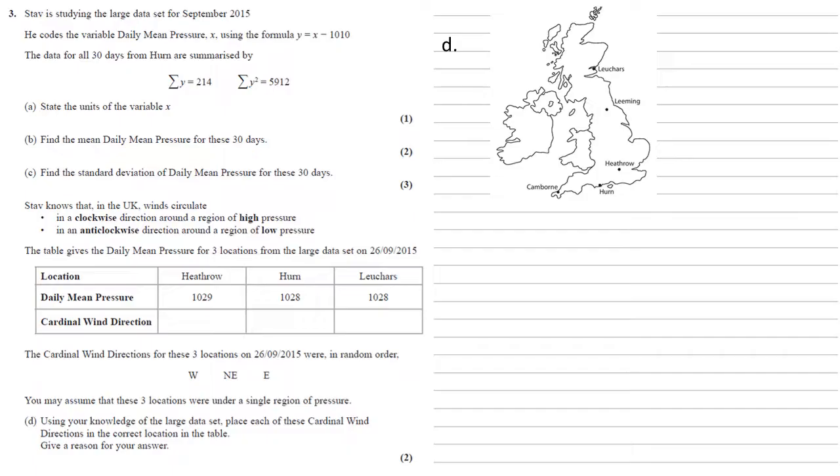First thing to check is what kind of pressure do we have. If we take our mean pressure and add on the standard deviation using our values that we've calculated, we get 1017.1 plus 12.1, which equals 1029.2. This is approximately the daily mean pressures we've been given in the table, very close to 1029 and 1028. As our mean pressures in the table are a standard deviation above the mean, we can say that they must be high pressures.